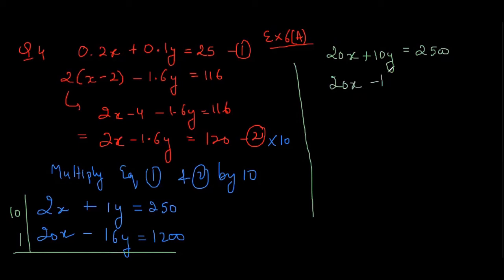And 20x minus 16y is equal to 1200. So subtract both of them. So this will be plus, so minus plus minus. Yeah, so 20x gets cancelled and then it becomes 26y equals to 1300. Yes.